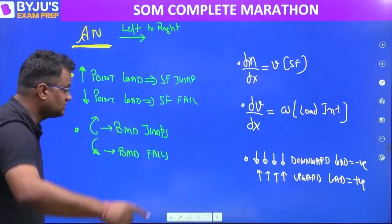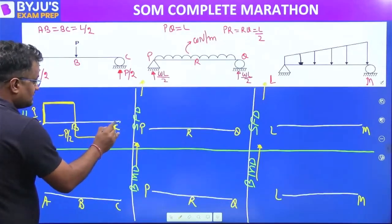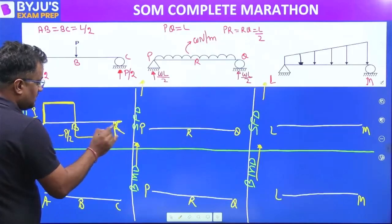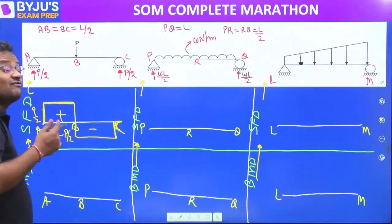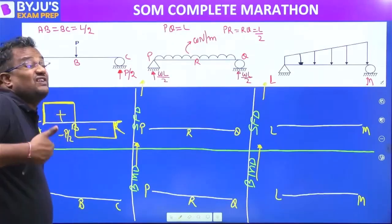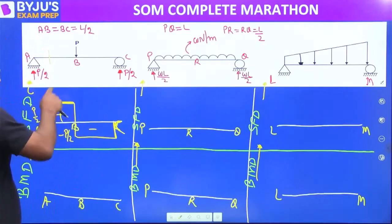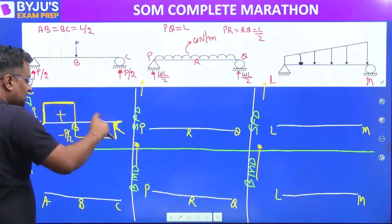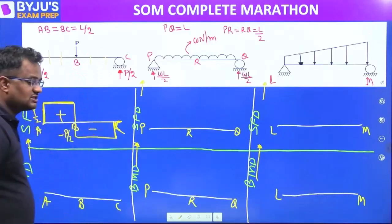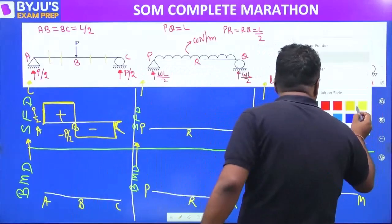The shear force is jumping like this at point C. The significance of this SFD diagram is that if I cut a section at any point, the value of the shear force at that section can be read directly from the diagram.